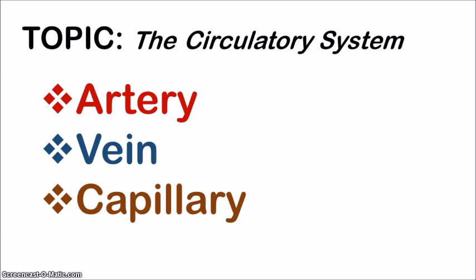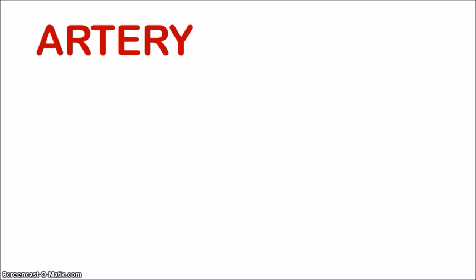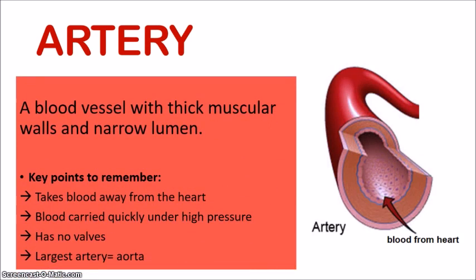Let's begin to look at the first one, the artery. The artery is the blood vessel which has the thick muscular walls and the narrow lumen. You can clearly see this in the diagram here — the walls are thicker and the lumen is very small. The lumen is that opening in which the blood is going to be flowing through.